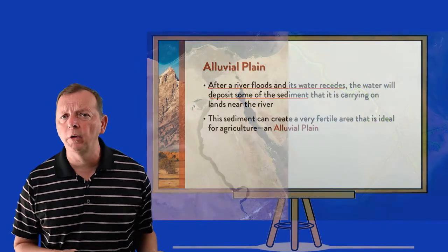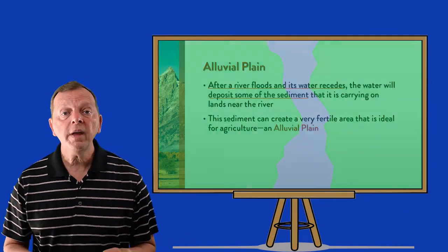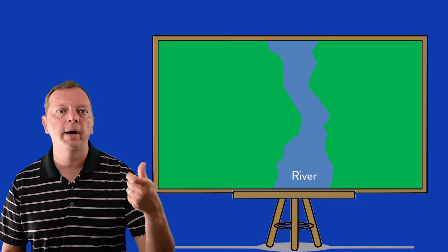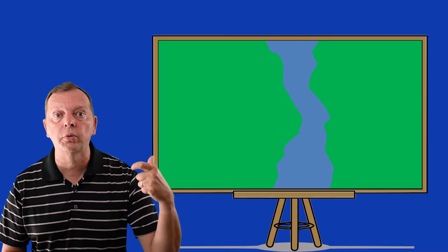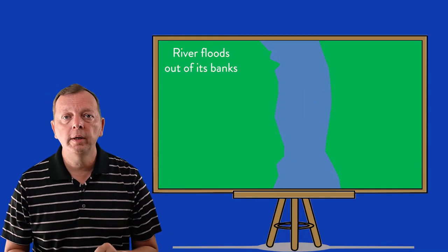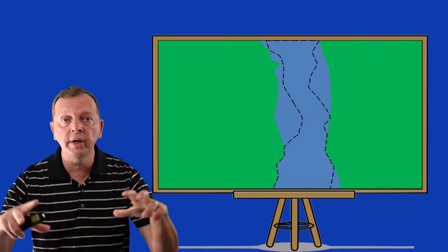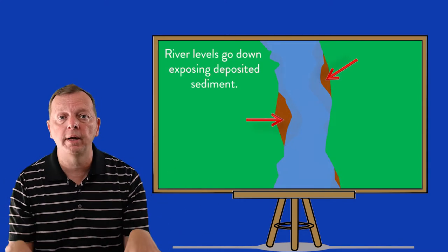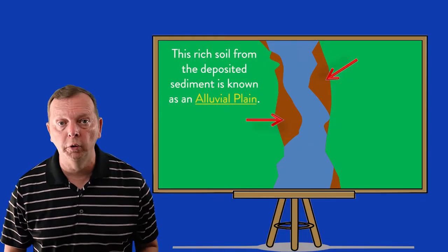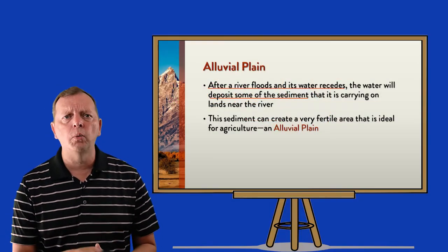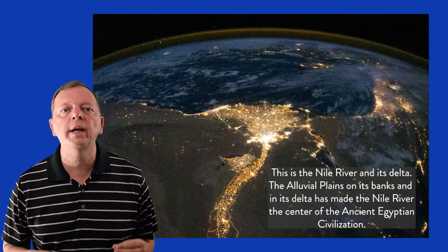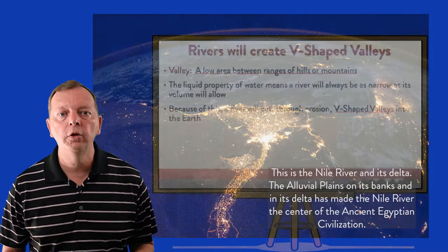Sediment plays another important part when rivers flood. In flatter areas, if there is lots of rain or an increase in snowmelt from mountains upstream, a river may flood out of its banks. When the river level begins to recede, much of the sediment is deposited in the ground, creating a very fertile area called an alluvial plain. Along with access to water and trade, these alluvial plains along rivers have made rivers incredibly important places in human history.